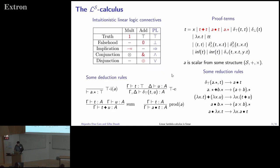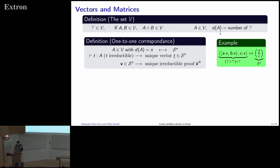So once we have this calculus, we can start studying what we can do with this. First, let's define a set V for vectors, and the set V is just top is in the set, and if you have two types in the set, the conjunction is in the set. So this is top to the N if you want. And then you can define the dimension of a type in V as the number of tops that you have in the type.